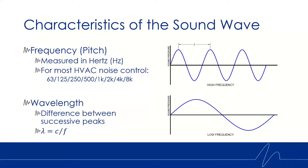Some characteristics of the sound wave include frequency, or pitch, measured in hertz — how often we see that difference in air pressure over time. For HVAC noise control, we deal with eight different octave bands: 63, 125, 250, 500, 1000, 2000, 4000, and 8000 Hz. The wavelength is also important to consider. At 63 Hz, the wavelength is about 18 feet long; at 8000 Hz, it's only about an inch long. So noise control measures for low frequency versus high frequency noise will be quite different.